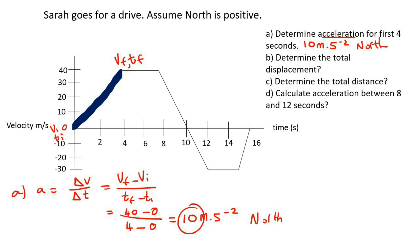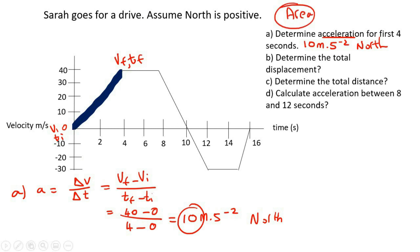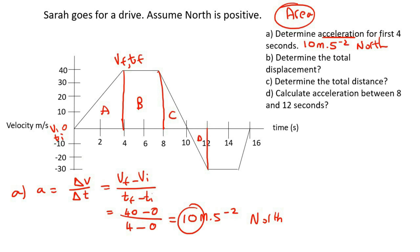The next question asks to determine the total displacement and distance. When you have a velocity graph and they talk about distance or displacement, think about area. We're going to work out the area for all the different parts. We can see there's a triangle, which I'll call A; then a rectangle, B; then a triangle, C; a triangle, D; a rectangle, E going from 12 to 15; and then a last triangle.